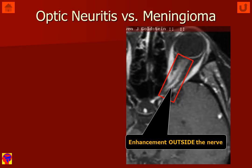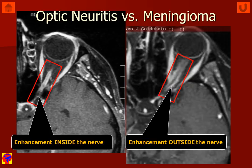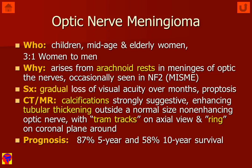In comparing optic neuritis versus meningioma, the enhancement is outside the nerve in meningioma; in optic neuritis, the enhancement is inside the optic nerve. Optic nerve meningiomas, like all meningiomas, are more common in women, typically middle-aged patients. They arise from arachnoidal rests in the meninges covering the optic nerve. These patients may have a gradual loss of visual acuity over months and mild proptosis. Calcification seen on CT is strongly suggestive of meningioma and is uncommon in optic nerve gliomas. The prognosis is very good, with an 87% 5-year survival.